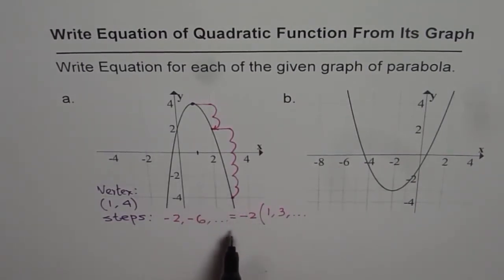So for the given parabola, we have minus 2 times the standard steps of 1, 3, 5, 7. And therefore, the value of a is minus 2.